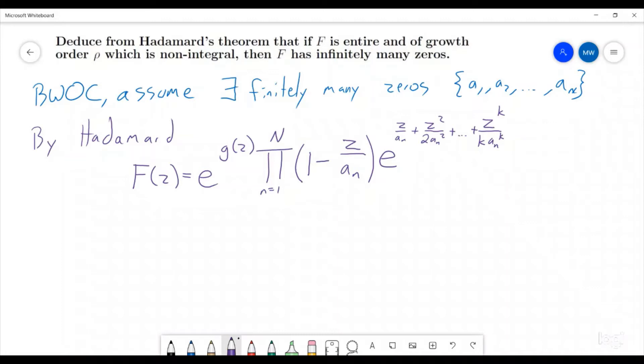So now, what are these different things going on? Well, this g of z, what is that coming from? In Hadamard's Theorem, g of z is of degree less than or equal to rho, and it must be an integer. So we are going to say it's less than or equal to degree k, where, since rho is not an integer, we know that rho is going to be strictly between k and k plus 1.